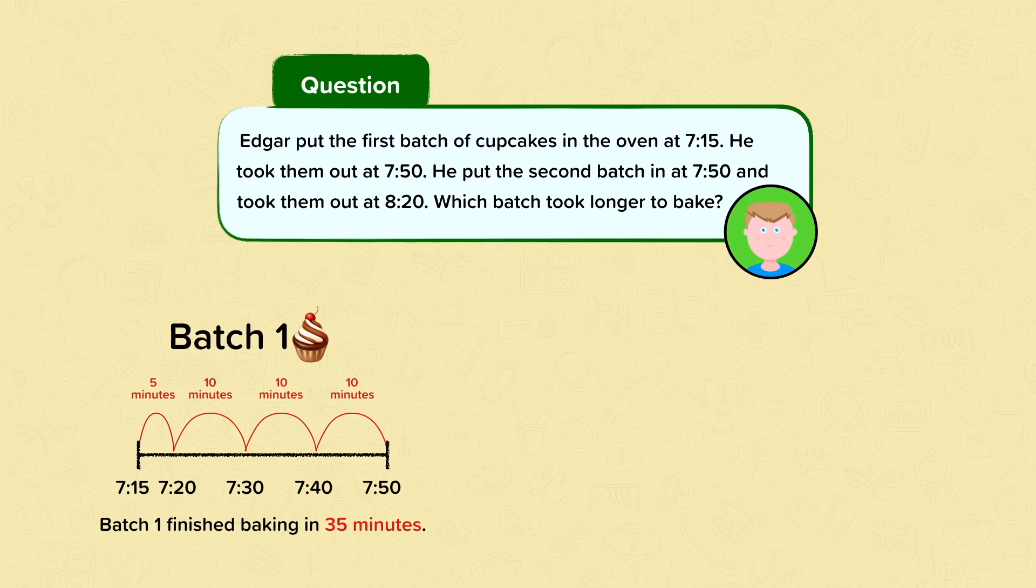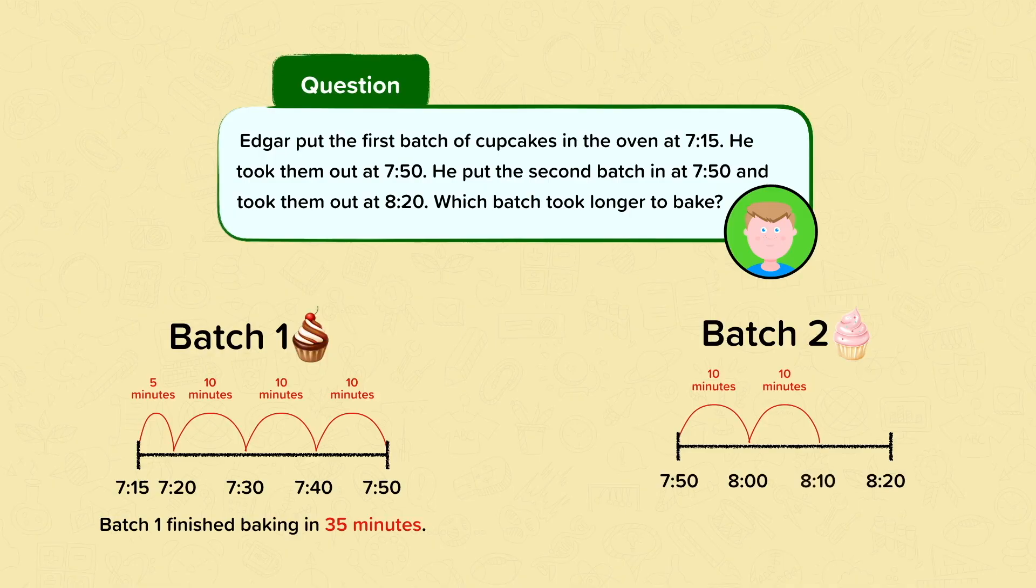The second batch went in at 7:50 and he took them out at 8:20. So we start our number line at 7:50 and end it at 8:20. Batch 2 finished baking in 30 minutes. We know that the first batch took longer to bake than the second batch.